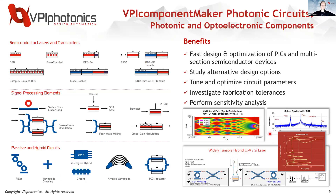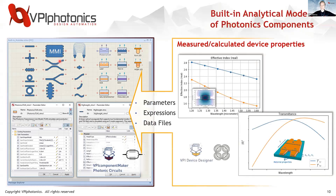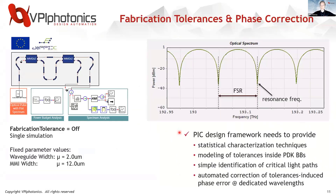One example of something you can design here is a widely tunable laser. VPI Component Maker Photonic Circuits has a number of built-in analytical models. There are a few ways to get information into those building blocks: you can use the built-in models adjusting parameters, define your own expressions, or load in data files — whether measurement data or simulation data. From VPI Device Designer, we can load in an S-matrix. Now I'll work through a short example using our MMI simulation results in a circuit-level design.